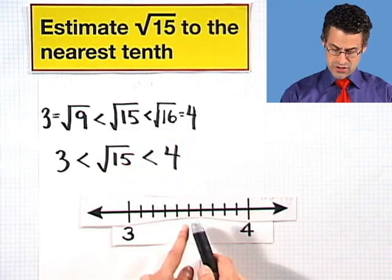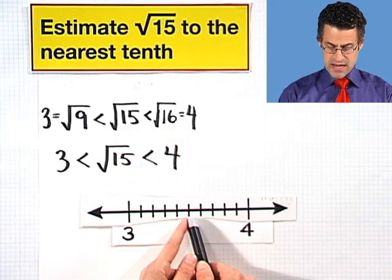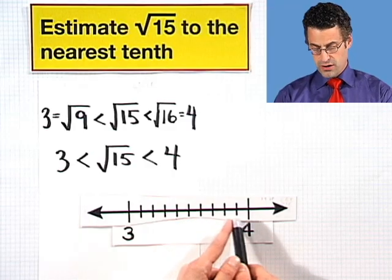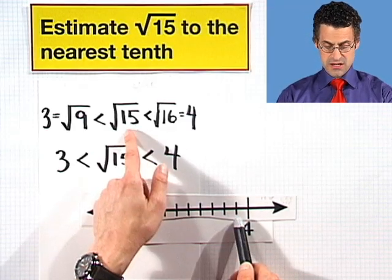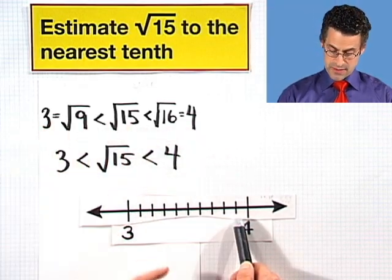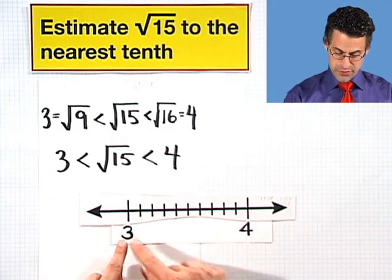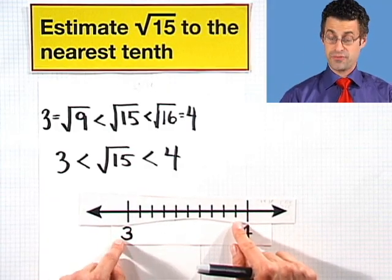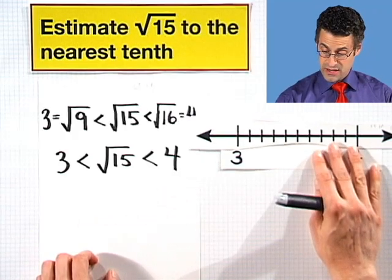So my thinking is that I shouldn't pick a point to guess right in the middle, I should favor 4, because this seems to be closer to 4 than it is to 3. So in fact, let's just go crazy, and let's actually pick 3.9 as our first guess.